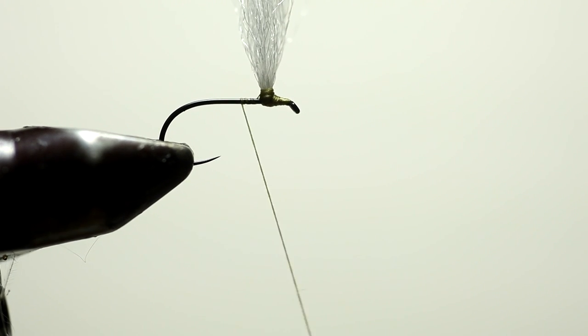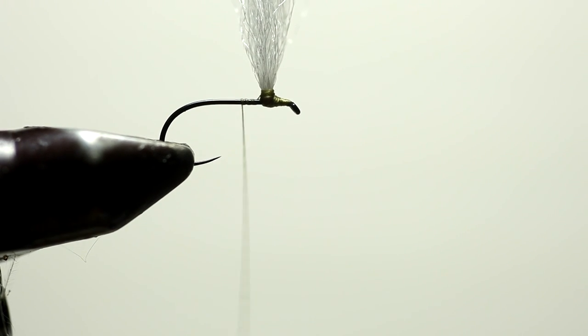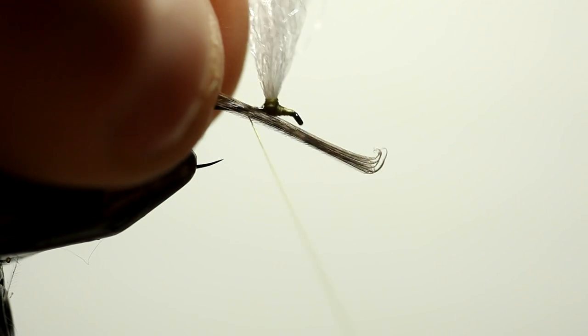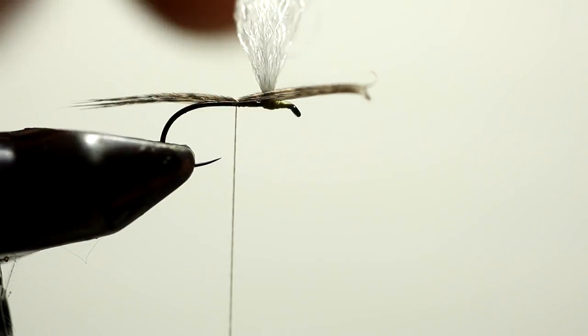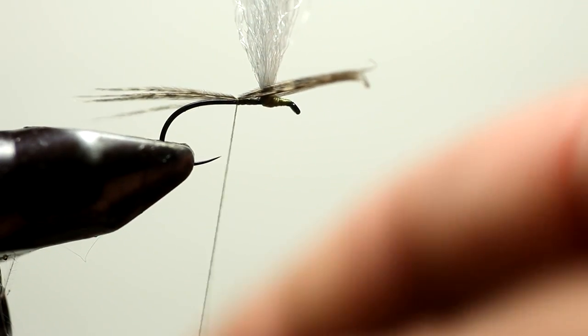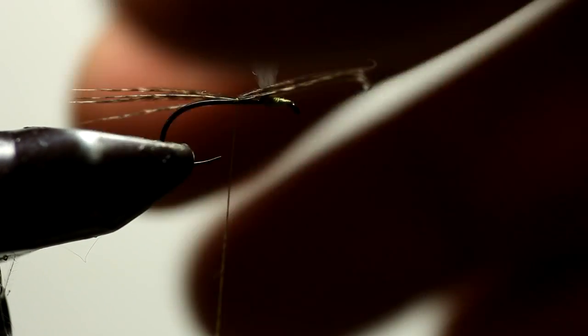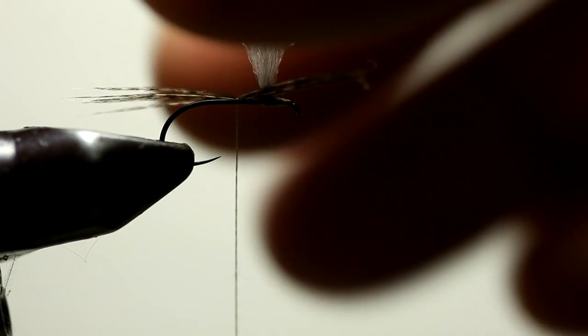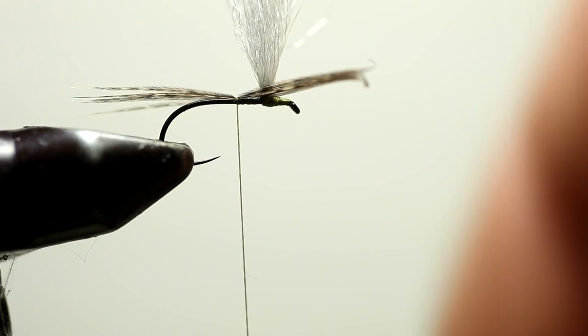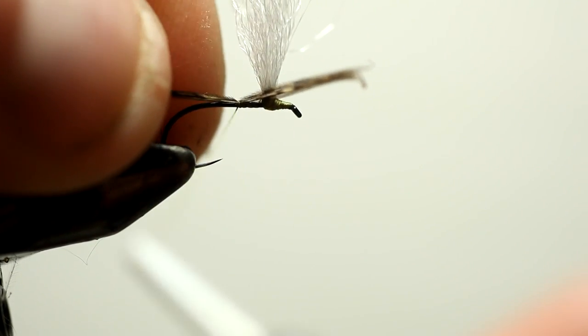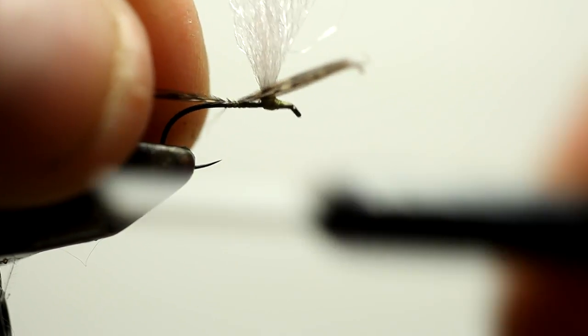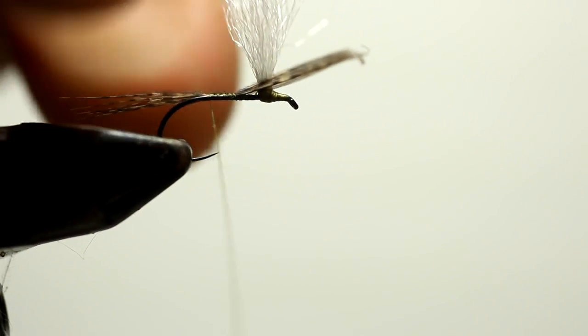The next material is medium Cock de Leon for the tails. We're going to have very sparse tails. Let's cut this parachute down a little bit here, just so I can get the thread around it. That's not going to be the length of the parachute when we tie the fly when it's finished, but that will do for now.